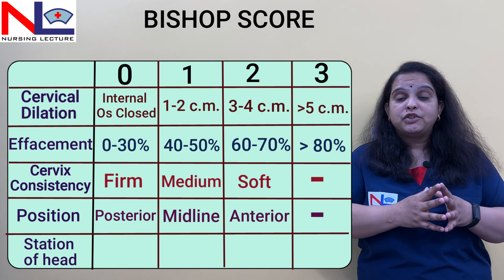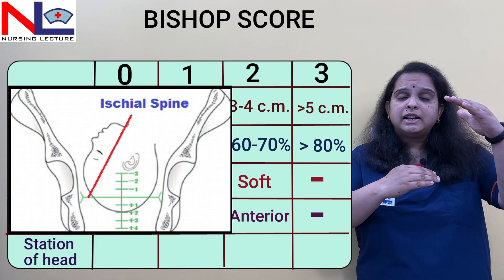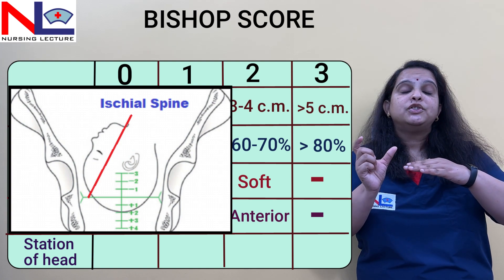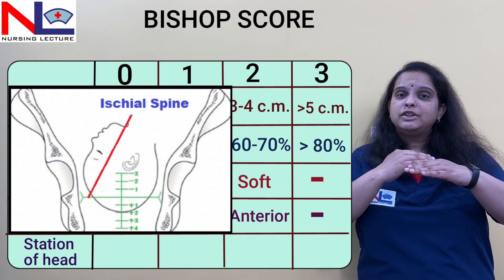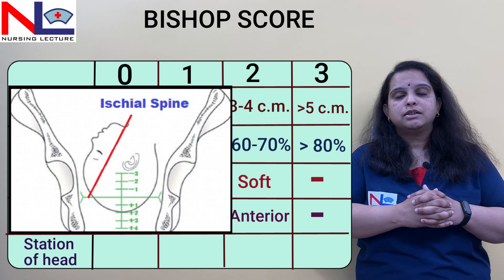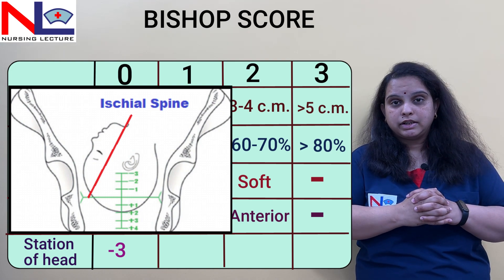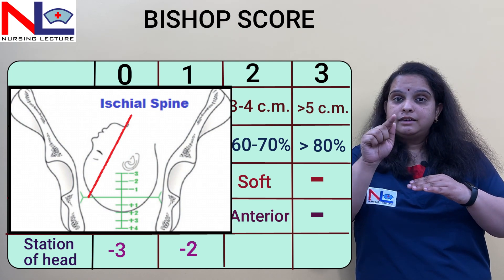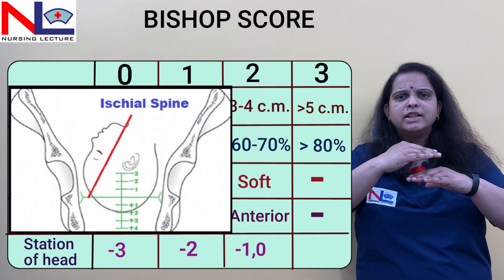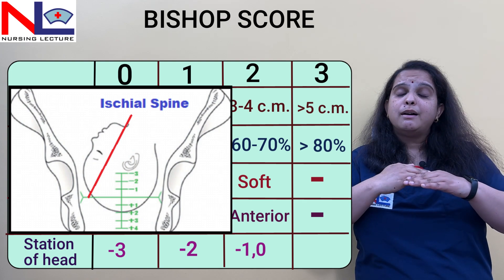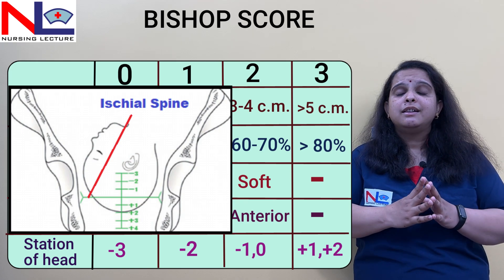The fifth parameter is fetal station, assessed in relation to the ischial spine. When the fetal head is at the level of the ischial spine, it is station 0. Levels above the spine are recorded as minus values, and below as plus values. If the head is at minus 3 (3 cm above the ischial spine), we score 0. At minus 2, we score 1. At station 0 or minus 1, we score 2. At plus 1 or plus 2 (below the ischial spine), we score 3, which is the maximum.